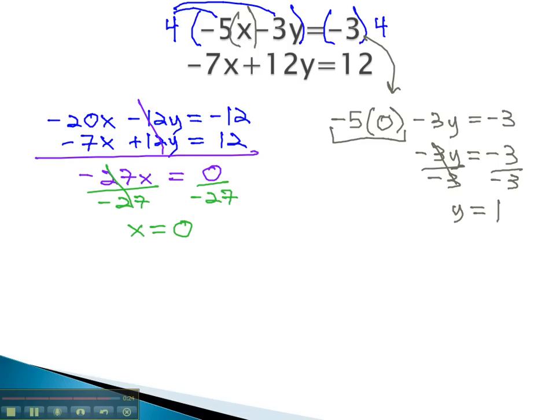We now know what x and y are in this system. As an ordered pair, x, y, 0, 1 is the solution to our system of equations.